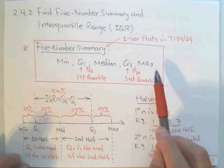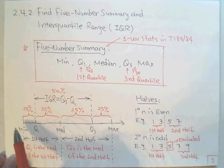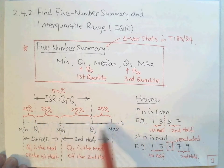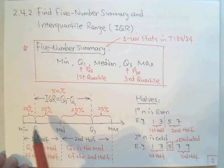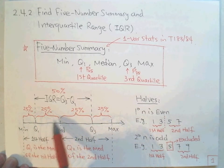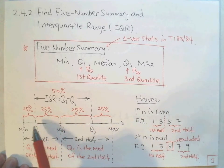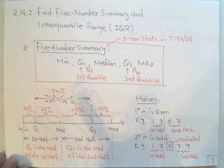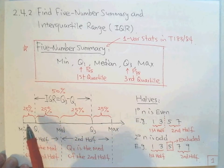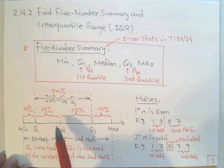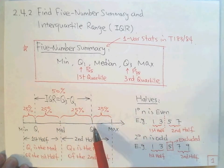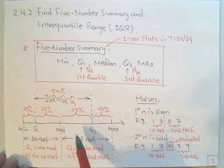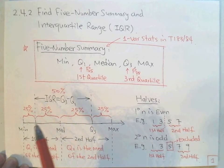If you look at all five numbers on a number line, we draw from left to right as data increases: from the minimum, go to Q1, go to the median, go to Q3, go to the maximum. The median splits the data at the 50th percentile. Q1 is P25, Q2 is the median at P50, and Q3 is P75. Each section covers 25% — four quarters make 100% of the data.